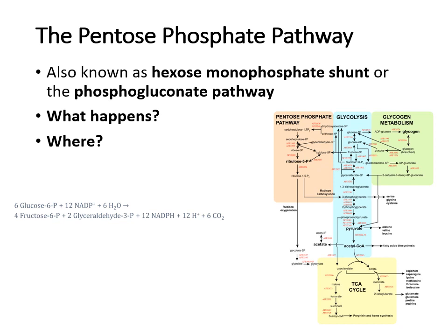When you look at this pathway, it's important to know where it occurs, which is in the cytoplasm. That's important because you'll notice that glycolysis also occurs in the cytoplasm. So it occurs parallel to glycolysis, and you can actually end up with some crossing over or sharing of some intermediates.